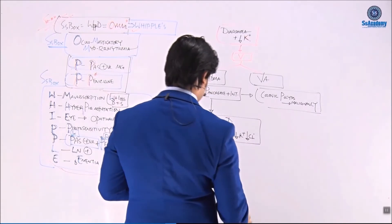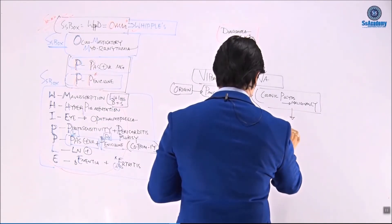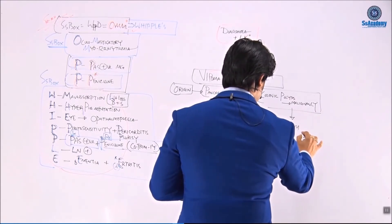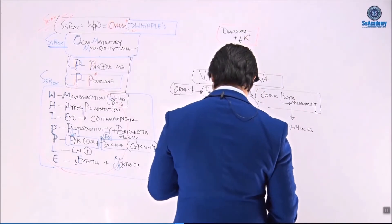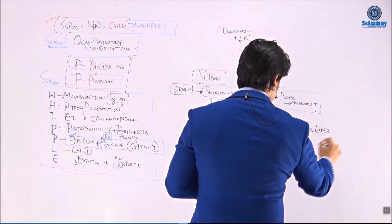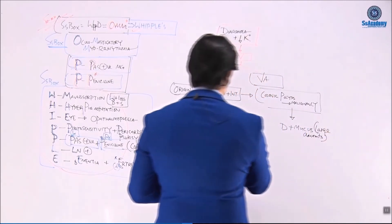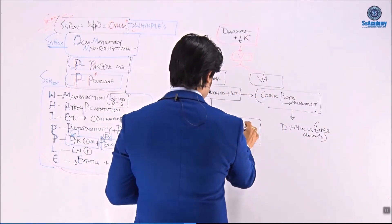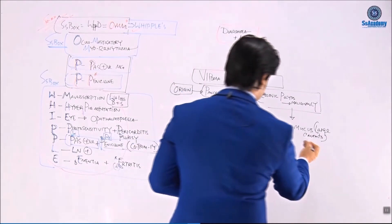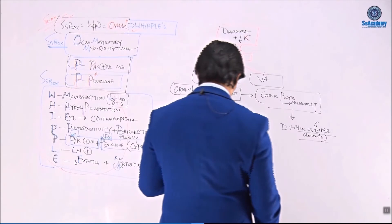In contrast, colonic polyps also cause diarrhea, but not that large in volume. They present with passing of large amounts of mucus. So the differentiating point is: VIPoma causes large volume watery secretory diarrhea, whereas villous adenoma causes diarrhea with large amounts of mucus.